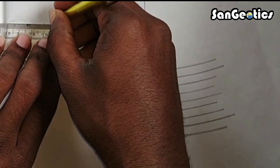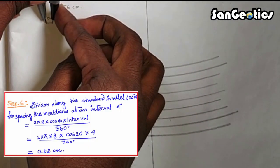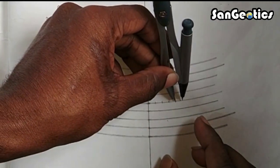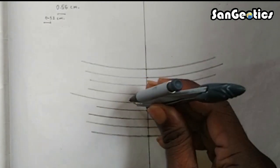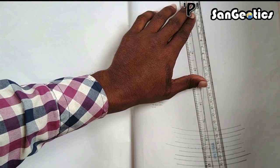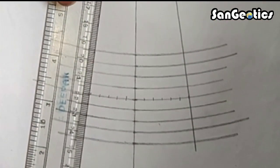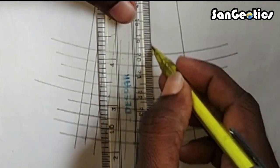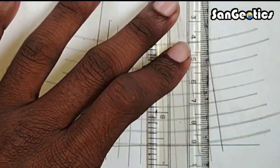Draw other parallels by spacing the meridians at a distance of (2π × r × cos(φ) × interval) / 360°. Then join all the points with P and extend the lines to form the meridians. Mark the boundary confirming the extent of latitude and longitude.